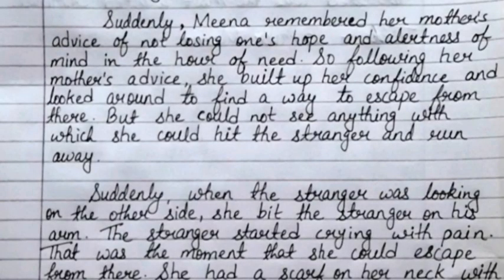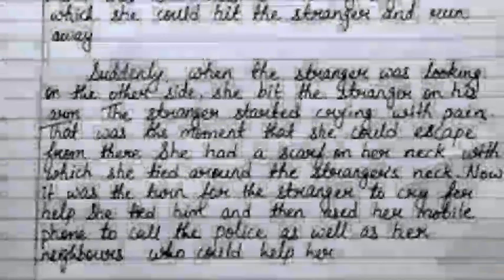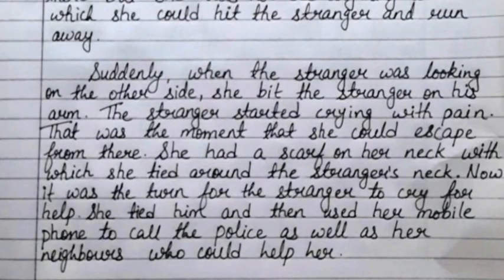Suddenly, Meena remembered her mother's advice of not losing one's hope and alertness of mind in the hour of need. So following her mother's advice, she built up her confidence and looked around to find a way to escape from there. But she could not see anything with which she could hit the stranger and run away. Suddenly, when the stranger was looking on the other side, she bit the stranger on his arm. The stranger started crying with pain. That was the moment that she could escape from there.